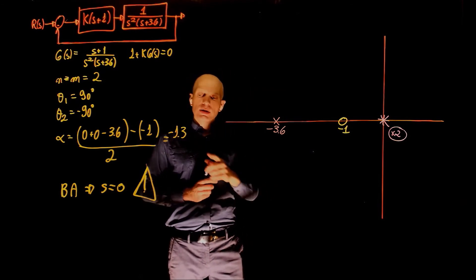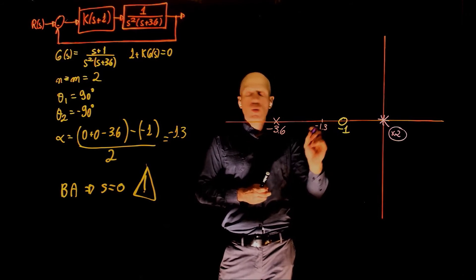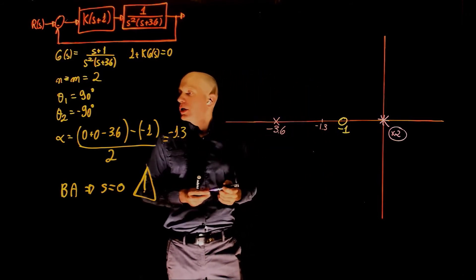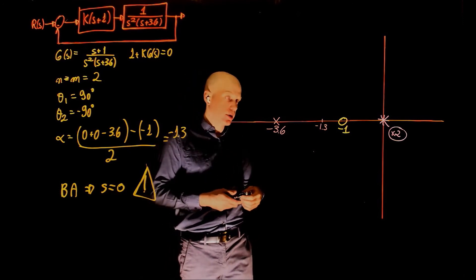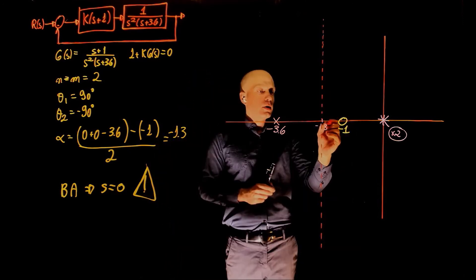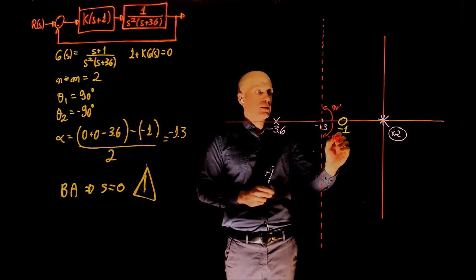We also know that the centroid of our asymptotes is at negative 1.3. One goes up at an angle of 90 degrees, the other one goes down at an angle of negative 90 degrees, so let's draw them as well. Here is one of them at 90 degrees, and here is the other one at negative 90 degrees.